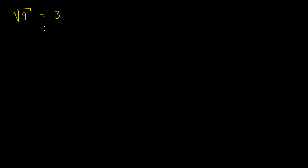So far, when we're dealing with radicals, we've only been using the square root. If I write a radical sign and put a 9 under it, this means the principal square root of 9, which is positive 3. What's implicit when we write it like this is that I'm taking the square root — I could also write this index 2 here, which means the principal square root of 9. The radical sign doesn't just have to apply to a square root; you can change the index and take an arbitrary root of a number.